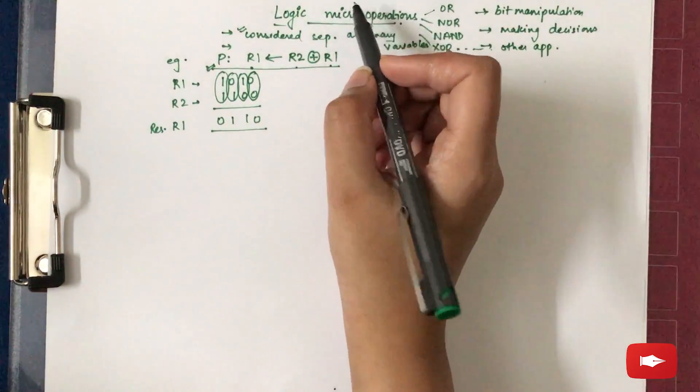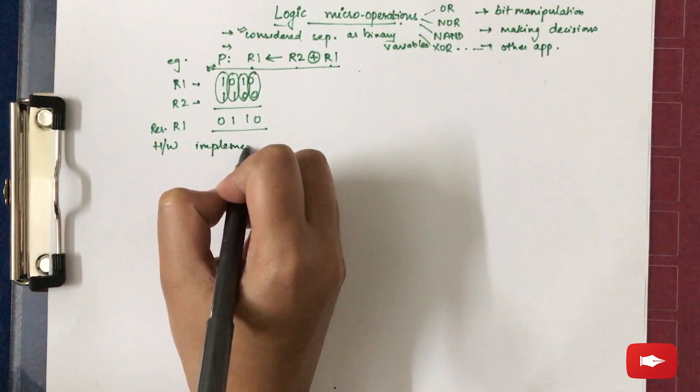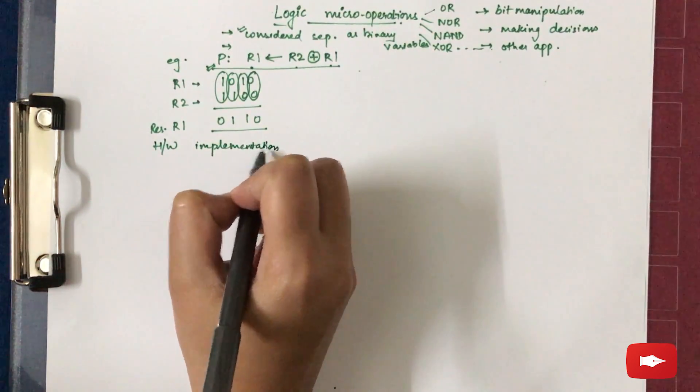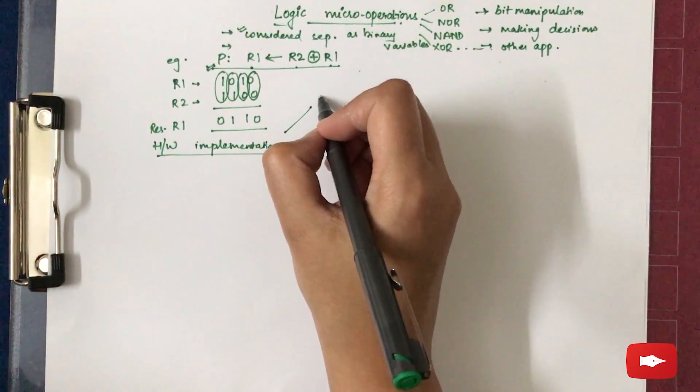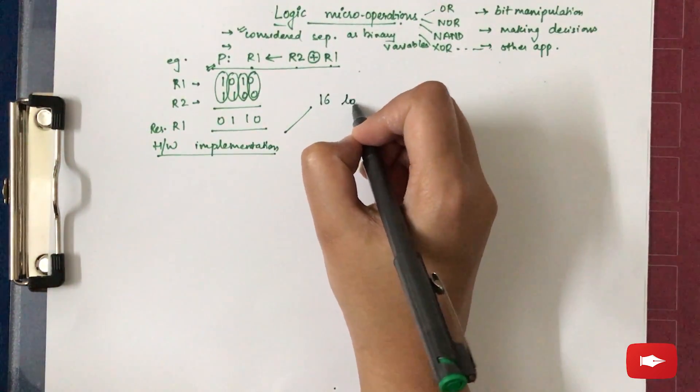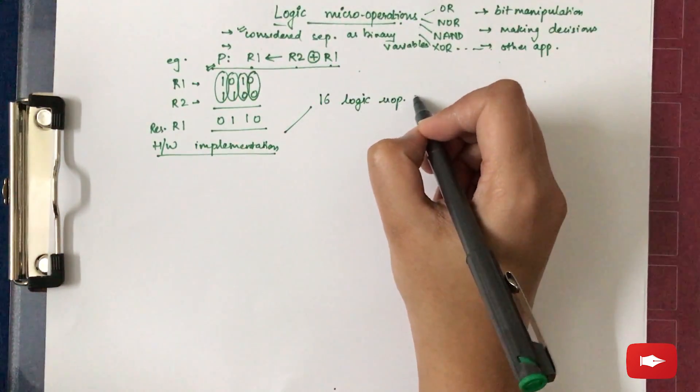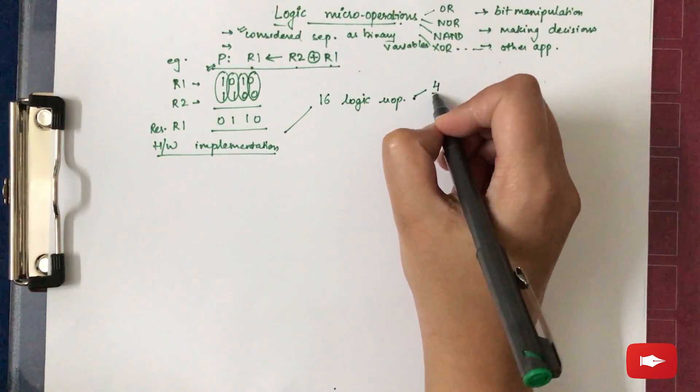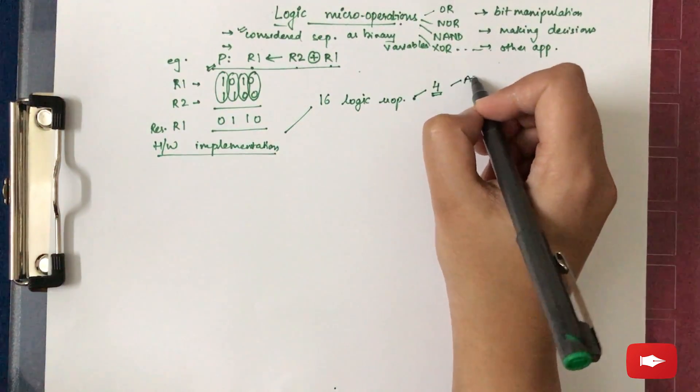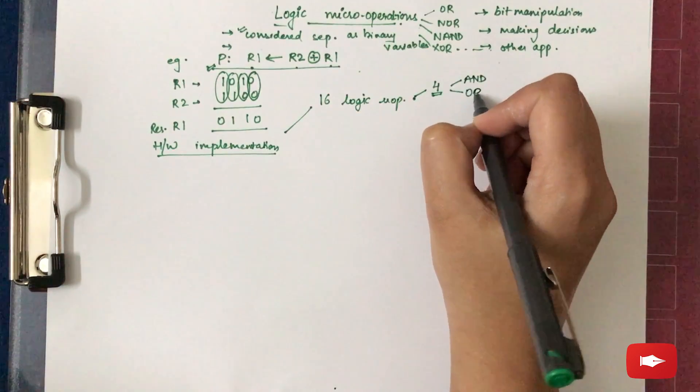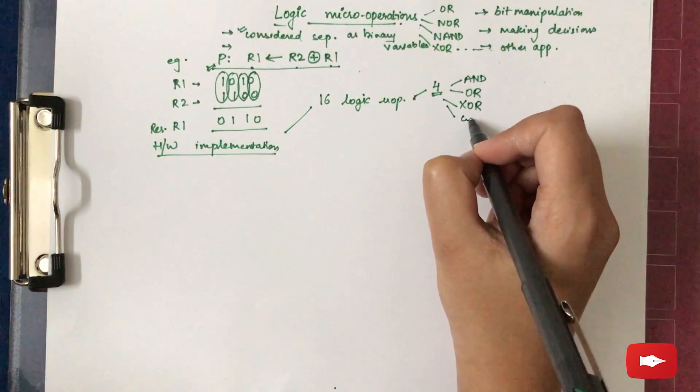Now the next important thing about logic micro operations is the hardware implementation. For this, we need to understand that there are 16 logic micro operations as a whole, but out of these 16, we only use 4 micro operations commonly: that is AND, OR, EXOR (that is exclusive OR), and the complement.